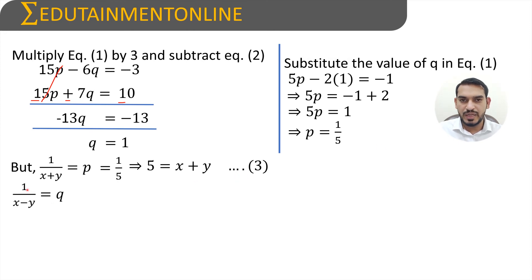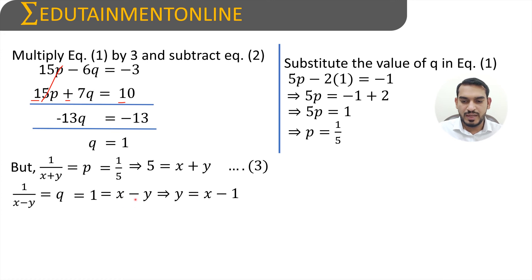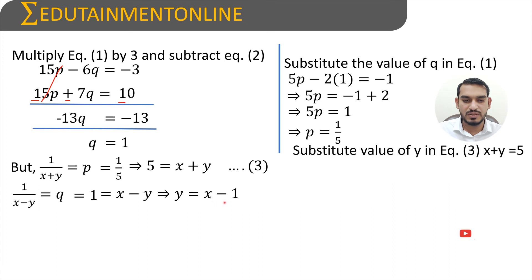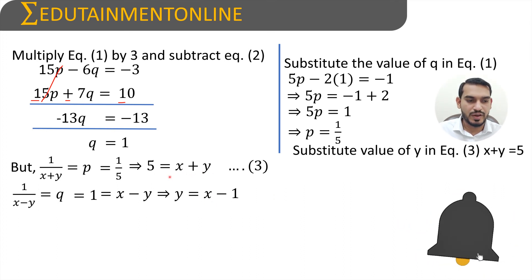Now, 1 by (x−y) equals q which equals 1. So x minus y equals 1. Transposing y to the other side, y equals x minus 1. We will substitute this value of y equals x minus 1 into equation 3, which is x plus y equals 5.